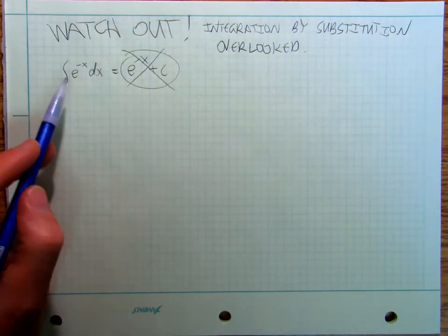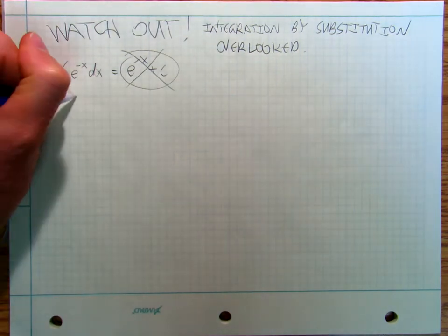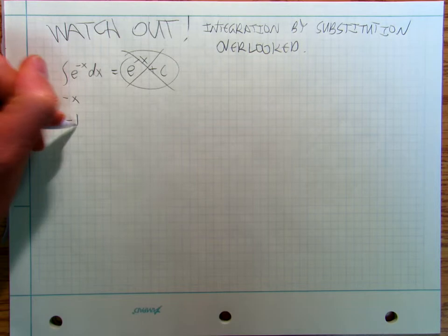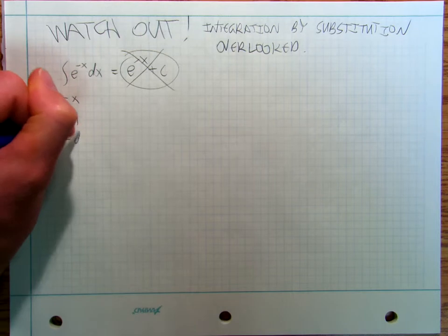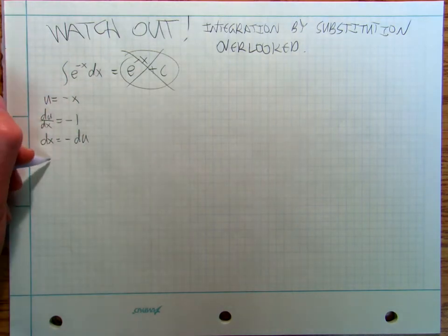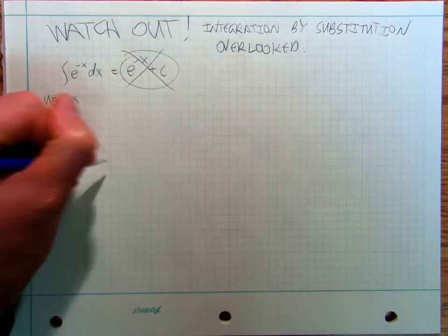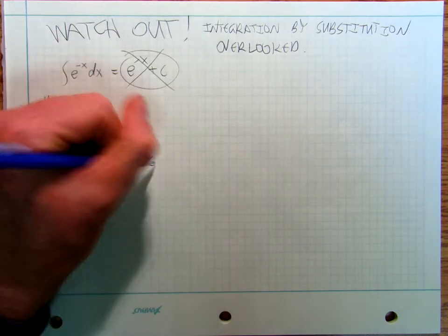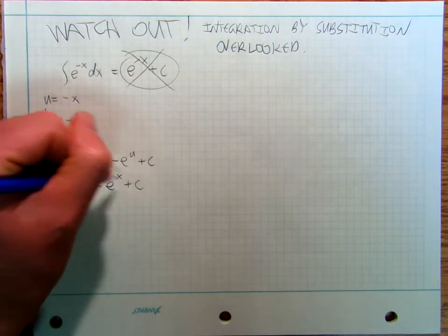This is an integration by substitution. What I have to do, if I really want to do it properly, is I have to say u equals negative x, and then I say du dx is equal to negative 1, and so then I say that dx equals negative du. So I've got the integral of negative e to the u du, which is going to be negative e to the u plus c, so it's going to be negative e to the negative x plus c.